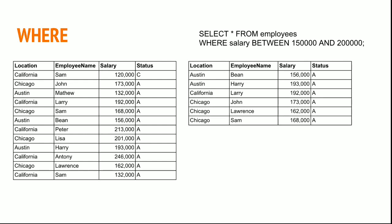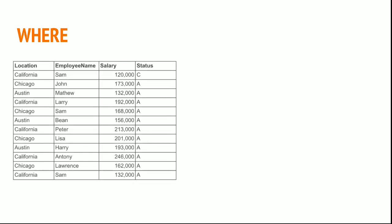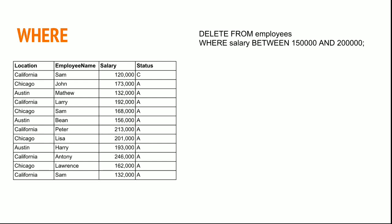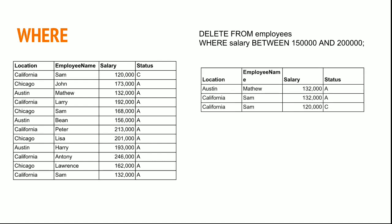Now I want to delete employees whose salary is between 150,000 and 200,000. I can run the DELETE command with the same BETWEEN condition. Once I execute this delete statement, if I then SELECT all employees from the table, only three entries remain — employees with a salary less than 150,000. This is the result after the select statement.